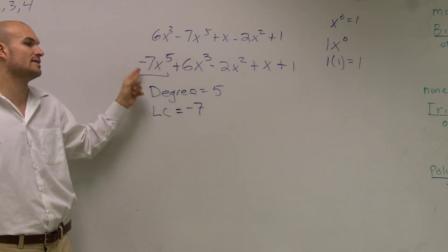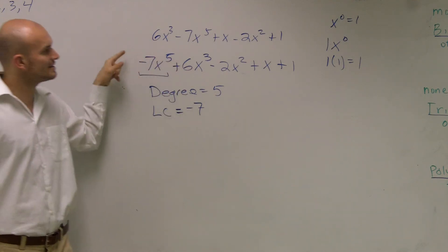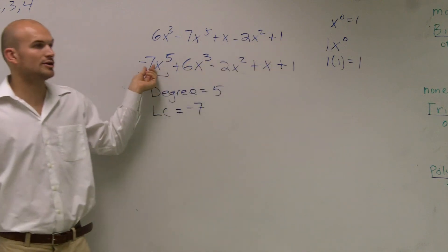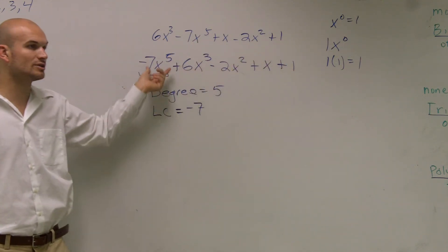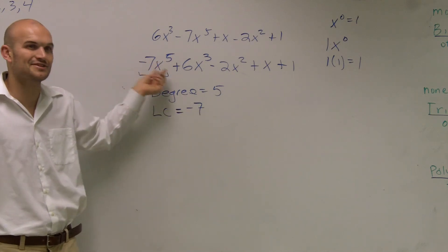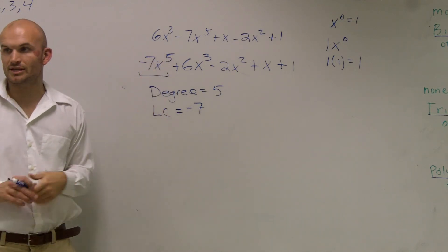A lot of students are like, well, 6 is greater than negative 7. You're right. But we only rank them by their degrees, not by their coefficients. So once you rank them by your degrees, then whatever your leading coefficient is, or whatever the coefficient of your leading term is, that's going to be your leading coefficient. Make sense?